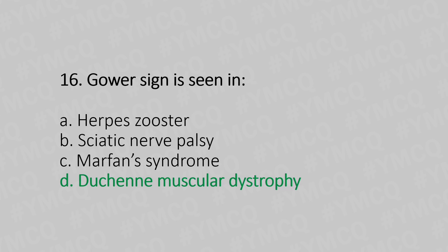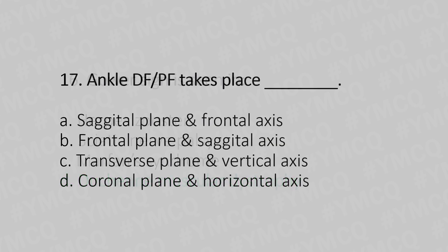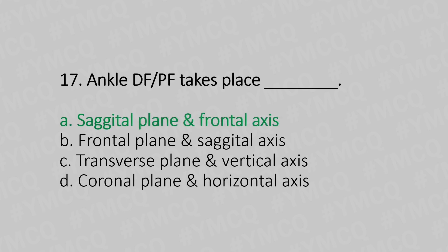Seventeenth question: Ankle dorsiflexion and plantarflexion take place in — Option A: sagittal plane and frontal axis. Option B: frontal plane and sagittal axis. Option C: transverse plane and vertical axis. Option D: coronal plane and horizontal axis. The answer is Option A, sagittal plane and frontal axis.